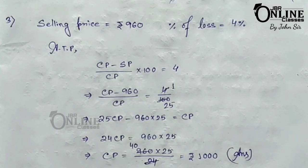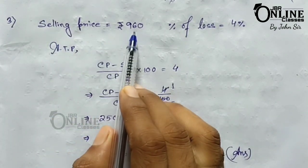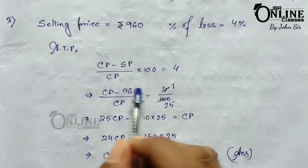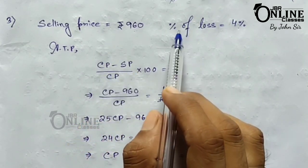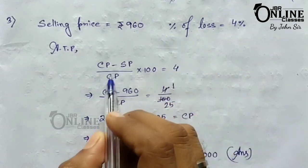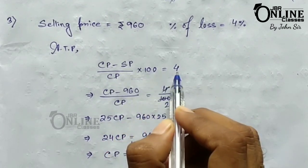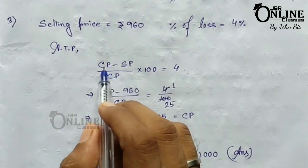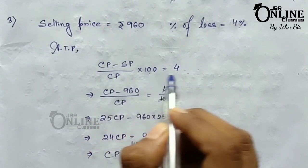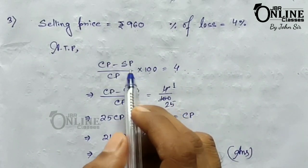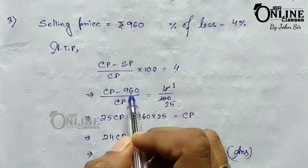In problem number three, by selling an article at rupees 960, a man incurs a loss of 4%. So SP = 960 and percentage of loss = 4%. We need to find the cost price. The formula for percentage of loss is: (CP minus SP) divided by CP, into 100 equals the percentage of loss. Substituting: (CP minus 960) divided by CP, into 100 equals 4.